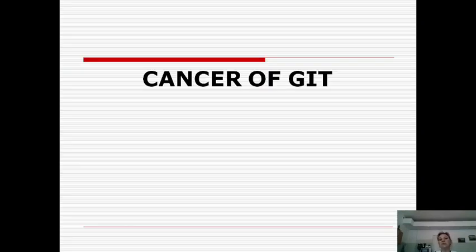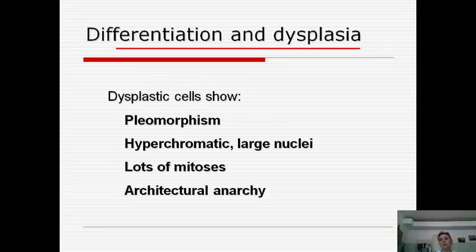The last section covers cancer of the gastrointestinal tract. First, a review of differentiation and dysplasia. Dysplastic cells show pleomorphism, hyperchromia and large nuclei, loss of normal mitosis, pathological mitosis, architectural anarchy, and abnormal growth of cells.